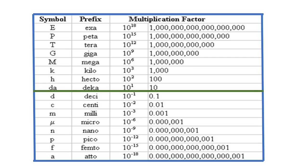The prefix table is as follows: E — Exa — 10 to the 18th power; P — Peta — 10 to the 15th power; T — Tera — 10 to the 12th power; G — Giga — 10 to the 9th power; M — Mega — 10 to the 6th power; K — Kilo — 10 to the 3rd power; H — Hecto — 10 to the 2nd power; DA — Deka — 10 to the 1st power; D — Deci — 10 to the negative 1 power; C — Centi — 10 to the negative 2 power; Milli — 10 to the negative 3 power; Micro — 10 to the negative 6 power; Nano — 10 to the negative 9 power; Pico — 10 to the negative 12 power; Femto — 10 to the negative 15 power; Atto — 10 to the negative 18 power.